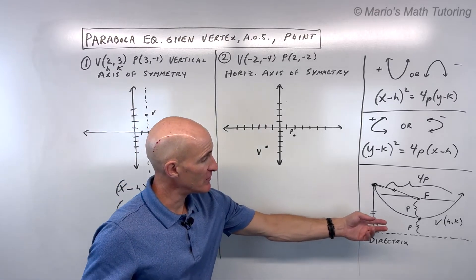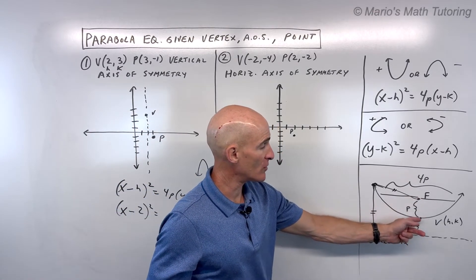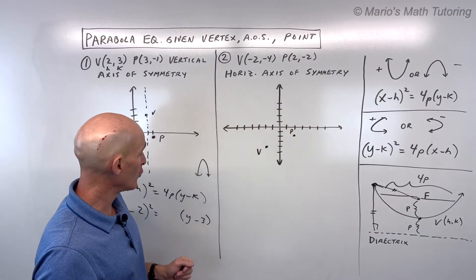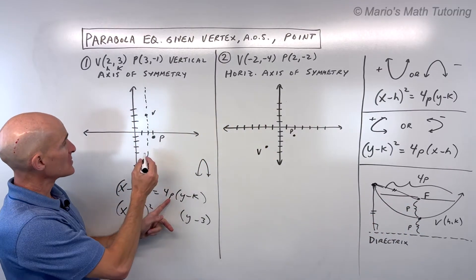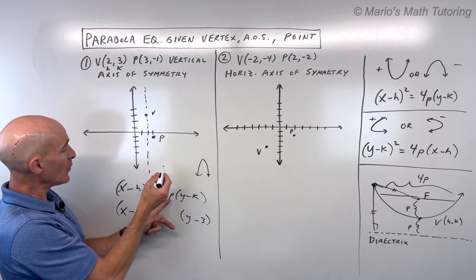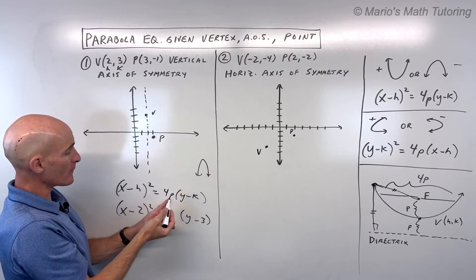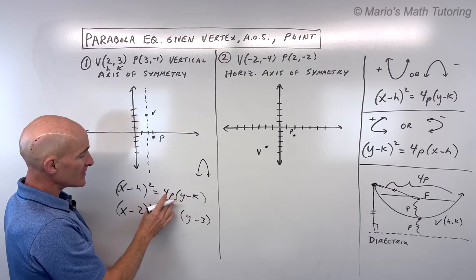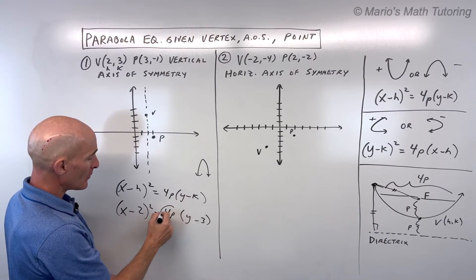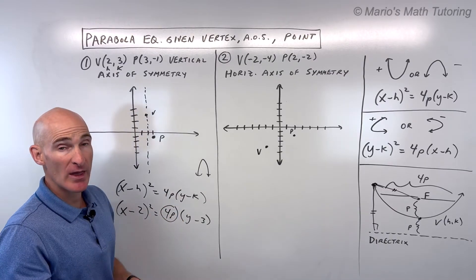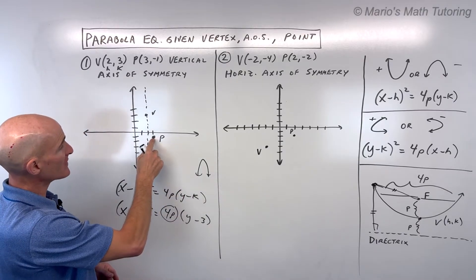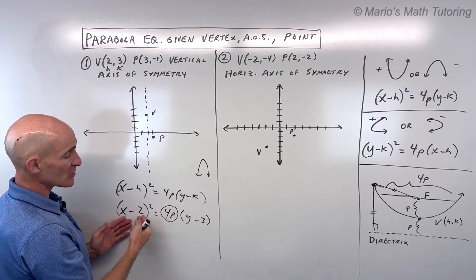This P is the distance from the vertex to the focus or the vertex to the directrix. That distance is our focal distance or our P distance. So in this case, we don't know what that P is. We don't know where our focus is. So let's just leave this as 4P for right now. Okay, and we're going to solve for P. And the way that we do that is if we know there's a point that's on the graph, it has to make this equation true.